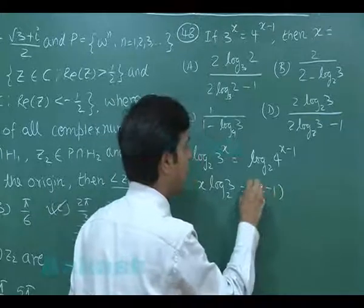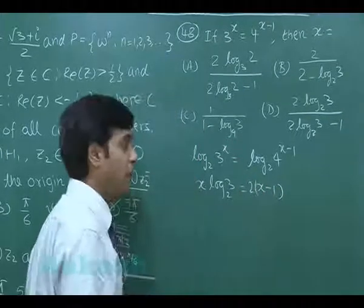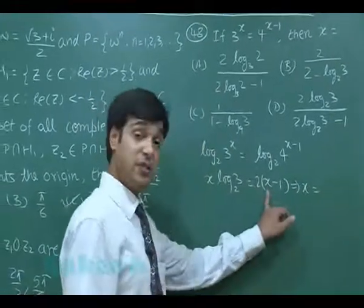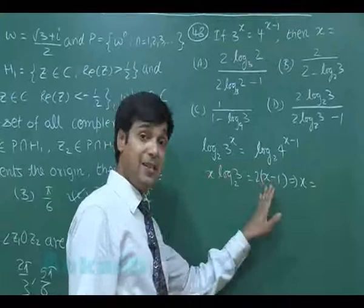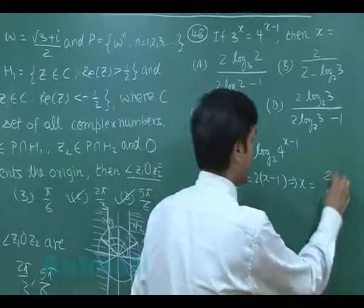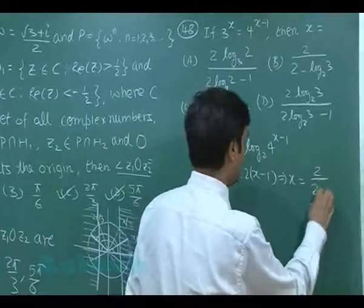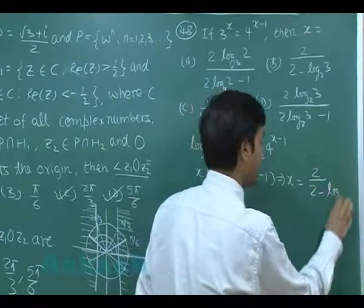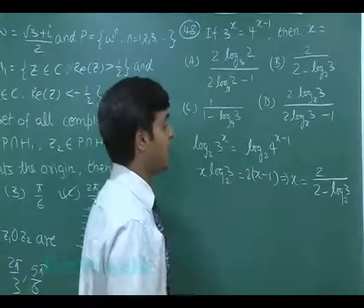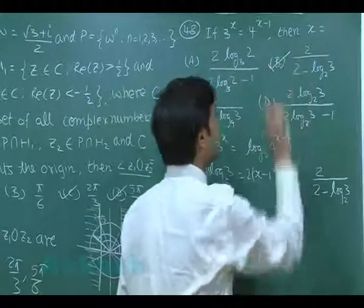This gives me x multiplied with log 3 to the base 2 equals x minus 1 multiplied with 2. From here I can get the value of x as this is 2x minus x into log 3 equals 2. So x comes as 2 upon 2 minus log 3 to the base 2. That is B, the correct answer.